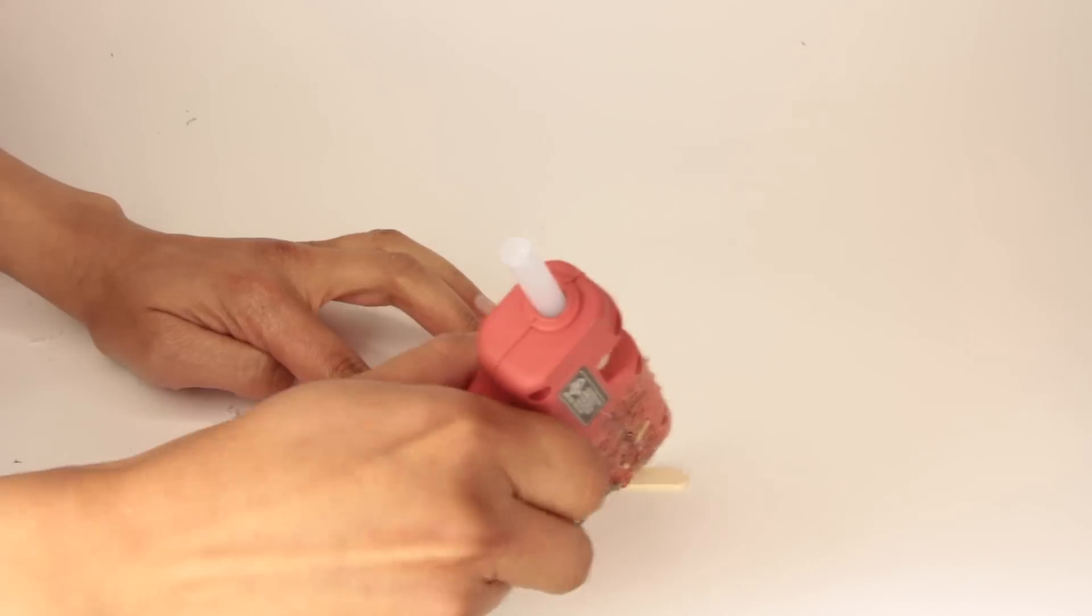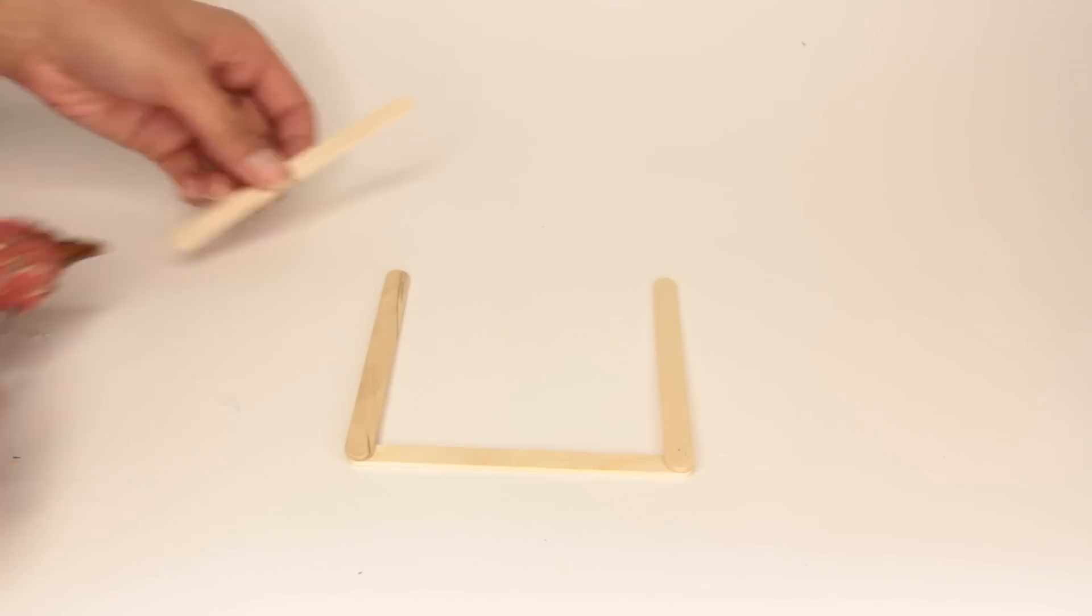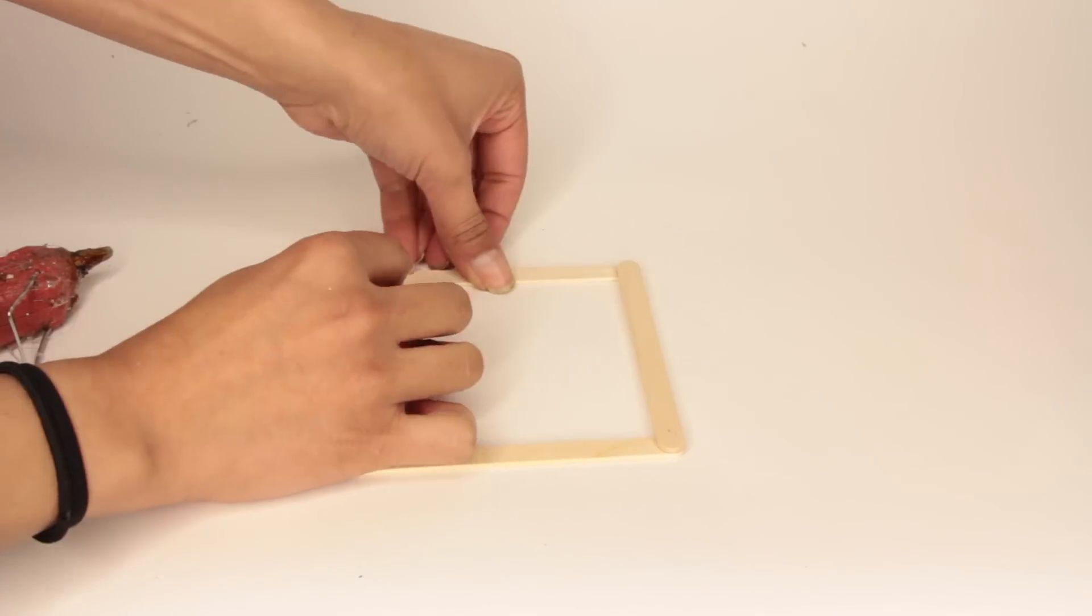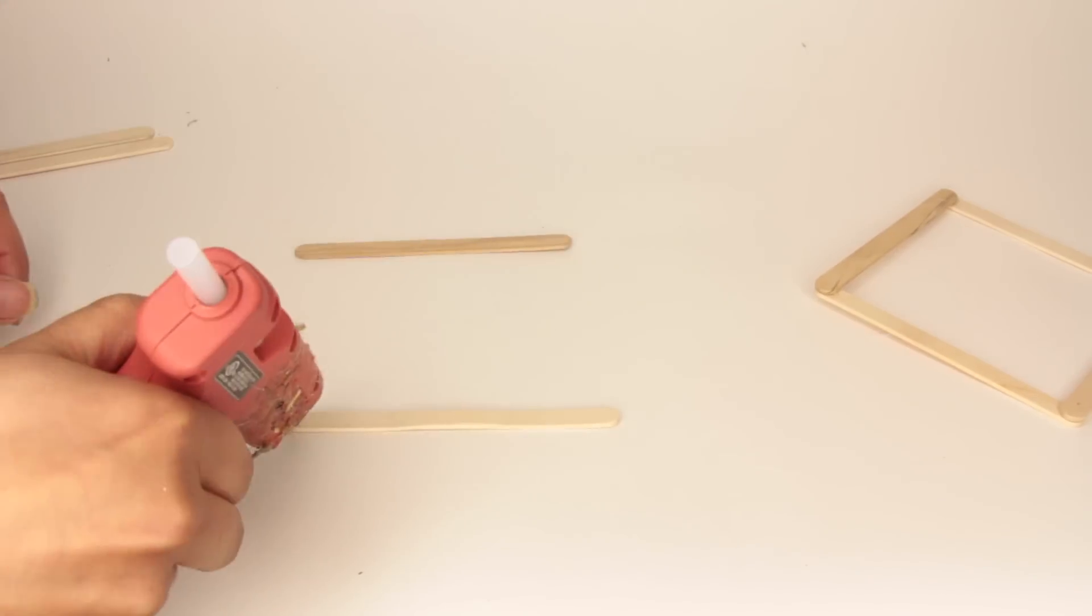Now moving on to the cube shelf. Now this one looks the most complicated, but it really isn't.